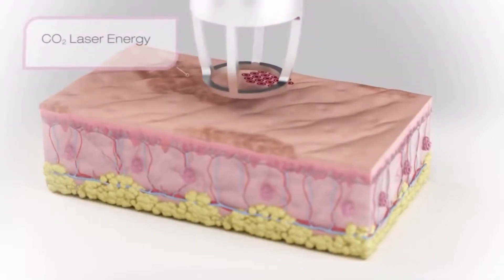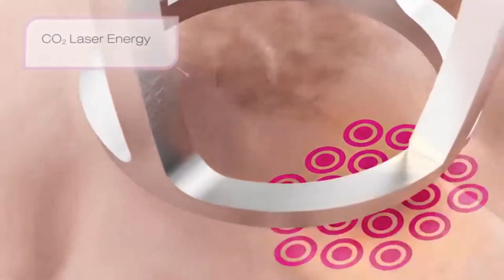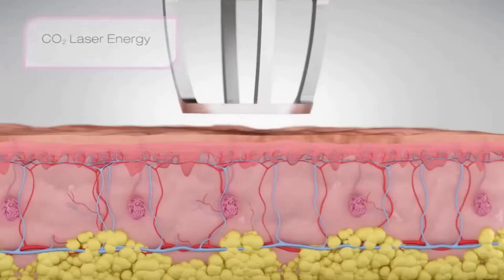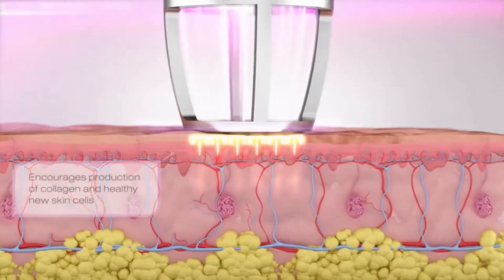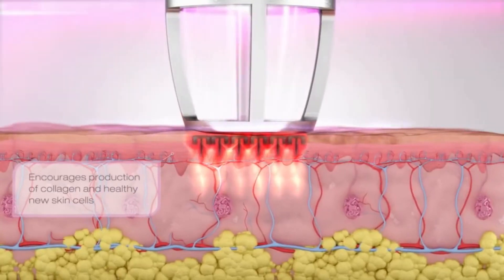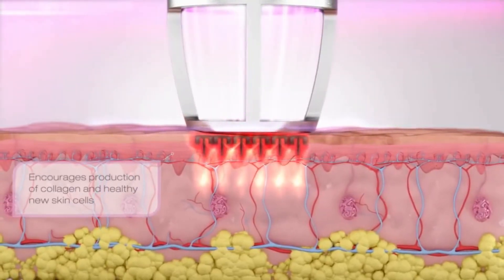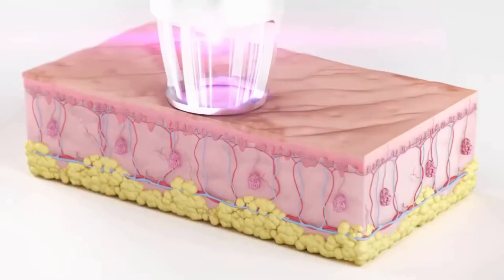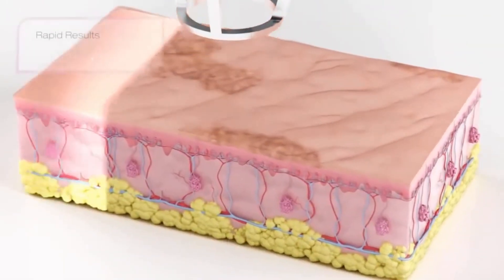CO2 laser is a cosmetic procedure that uses a laser to resurface the skin and improve its texture and appearance. The principle behind fractional CO2 treatment is that the laser creates many tiny columns of heat in the skin, which stimulates the production of collagen and elastin, leading to smoother, more youthful-looking skin.